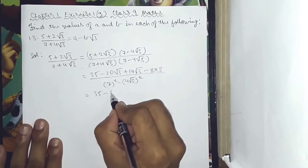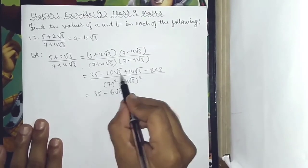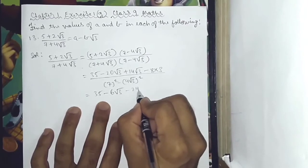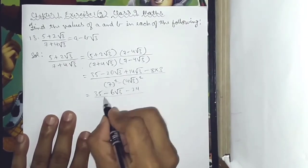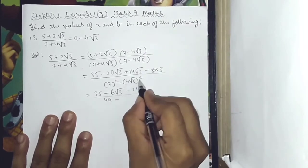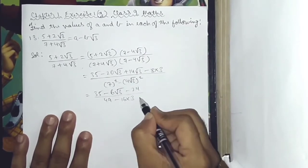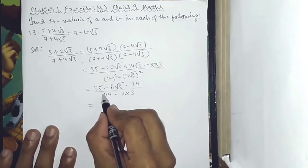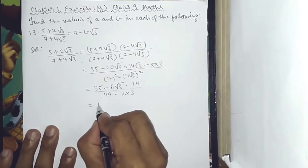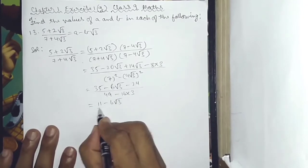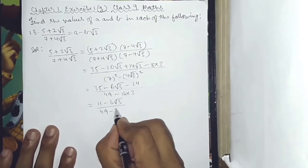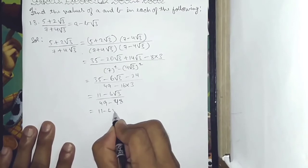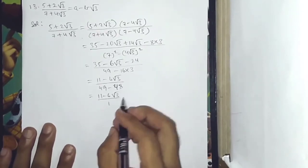So the numerator gives: 35 minus 24 is 11, and minus 20 root 3 plus 14 root 3 is minus 6 root 3. The denominator is 7 squared minus 4 squared times 3 squared, that is 49 minus 48, which equals 1. So we get 11 minus 6 root 3 divided by 1.